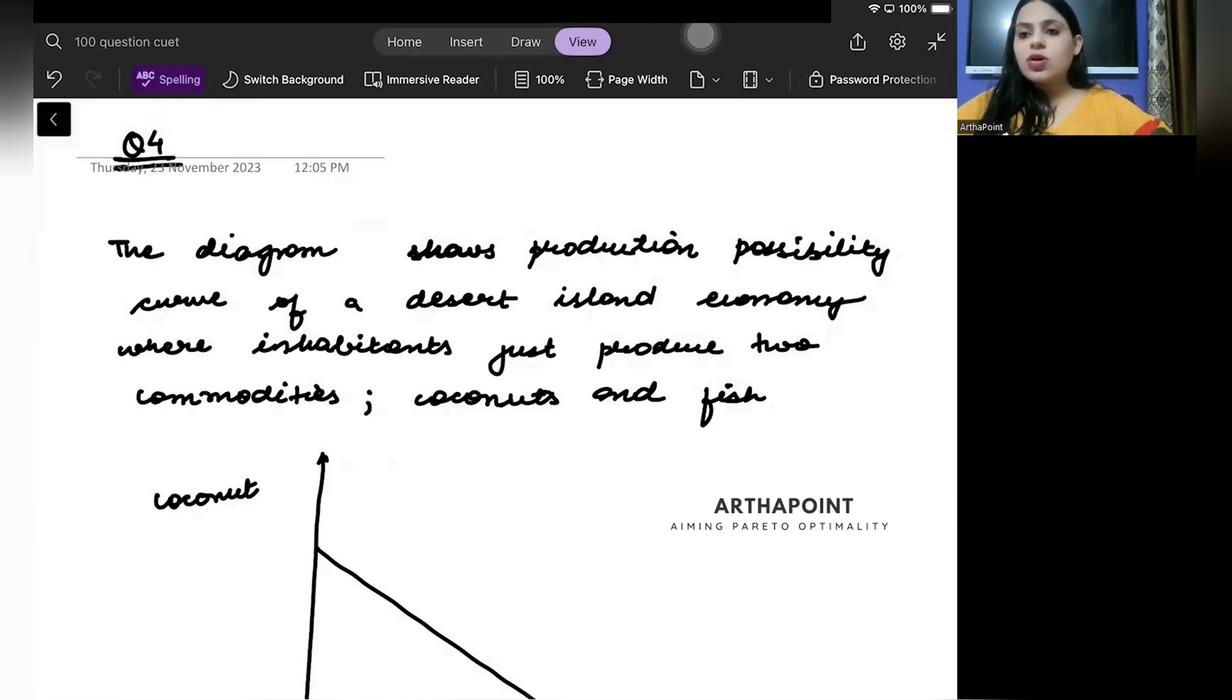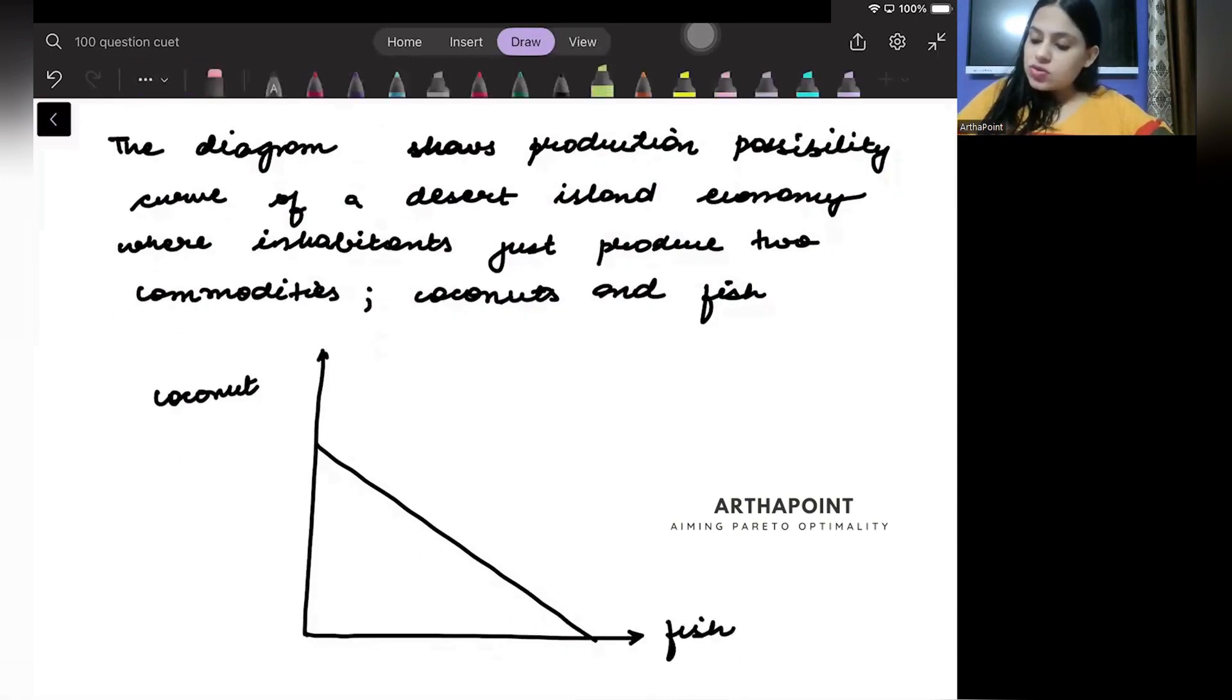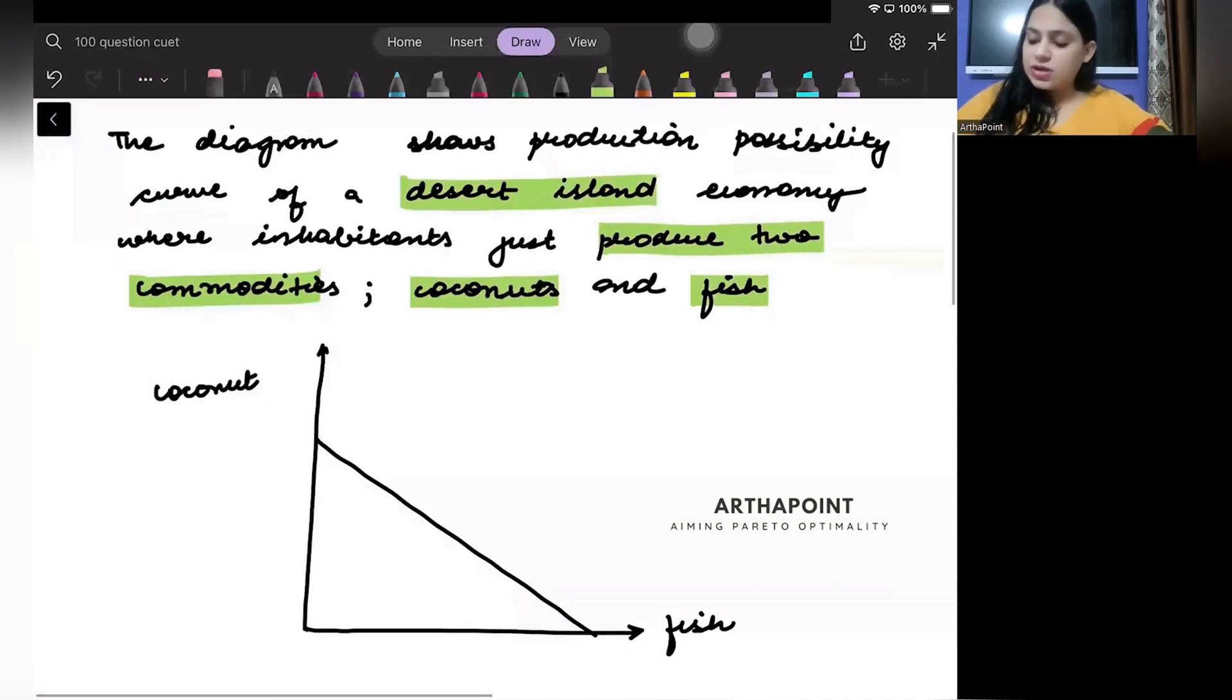This is a question based on introductory macroeconomics. Let's read the question. The diagram shows production possibility curve of a desert island economy where inhabitants produce two commodities, coconut and fish. Production possibility frontier.